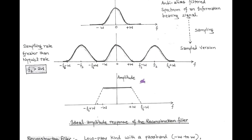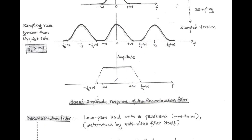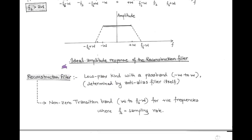After this, a reconstruction filter is used to recover the original baseband signal having bandwidth W. The ideal amplitude response of the reconstruction filter is shown in the figure. This reconstruction filter is a low-pass kind with the pass band between -W to W. The non-zero transition band is limited between +W to Fs - W, that is for positive frequency. Here, Fs is called the sampling frequency, which must always be greater than twice of W.